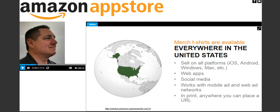If you want to do in-app advertising, it works with the Amazon ad network or any ad network. Really, anywhere you can put a URL that will get you to the Amazon.com website, you can sell your T-shirts. This includes print — if you ever print out flyers for a convention or have printed packaging, put the URL for your shirt there. You can use tools like bit.ly to make nice, short, friendly URLs.